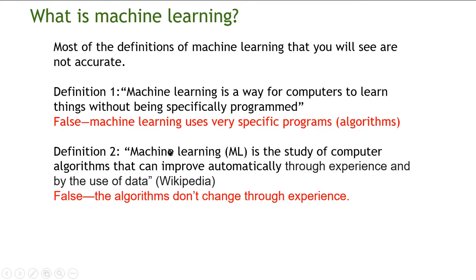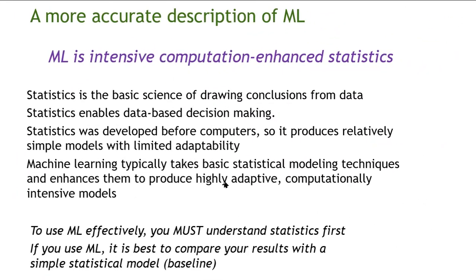Definition two: machine learning is the study of computer algorithms that can improve automatically through experience and by the use of data. This is also false. The algorithms do not change through experience. What changes are the parameters of the model. In this way, machine learning is similar to statistics.